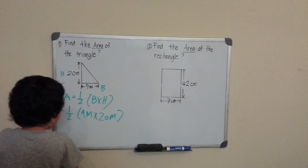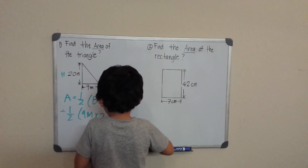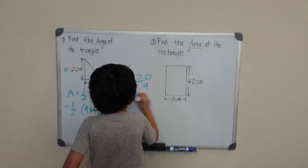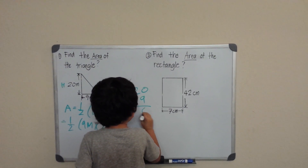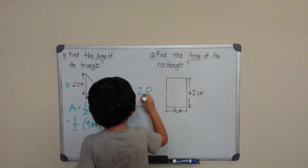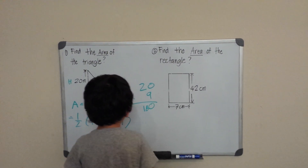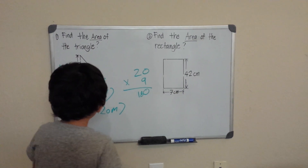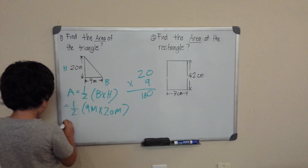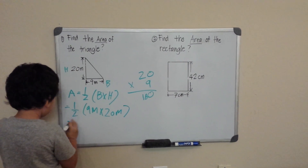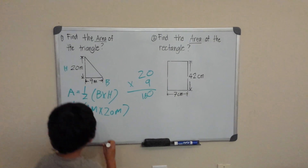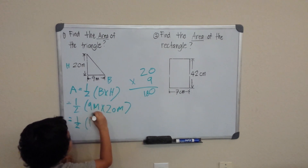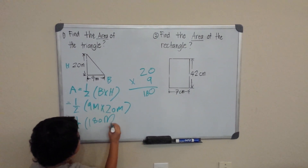So we multiply them. 20 times 9 equals — 9 times 2 is 0, 9 times 2 is 18. That's good, so it would be 180. So one half times 180 — meter times meter is meter squared.